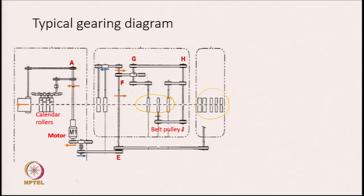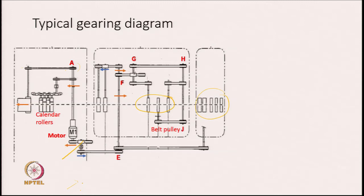If we compare this with this, here you see that this pulley is rotating in this direction, but this pulley is rotating in the opposite direction because this belt is going below this pulley. The belt is driving this pulley as well as this pulley, but it is going under the pulley and as a result the directional rotation changes. So if it is rotating clockwise, this will rotate in the anticlockwise direction.